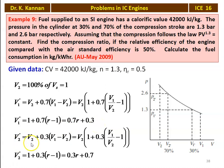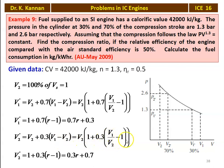Similarly, V2-dash equals V2 plus 30 percent of the stroke volume (V1 − V2). Taking V2 outside: 1 + 0.3(V1/V2 − 1). Since V2 = 1, V2-dash = 1 + 0.3(R − 1) = 0.3R + 0.7.